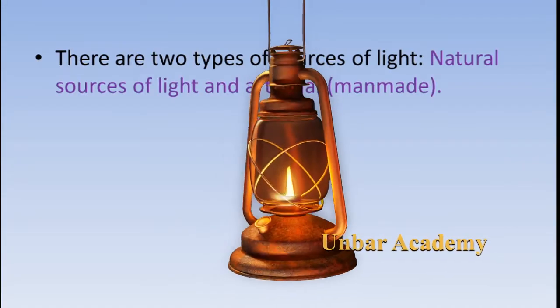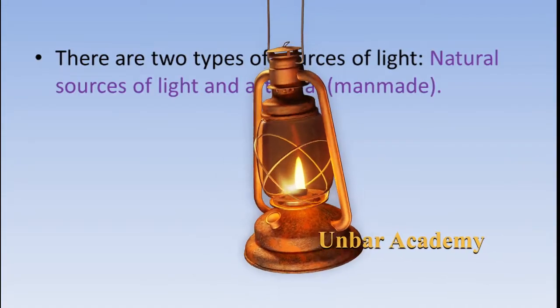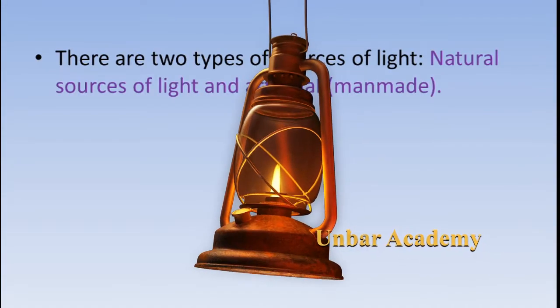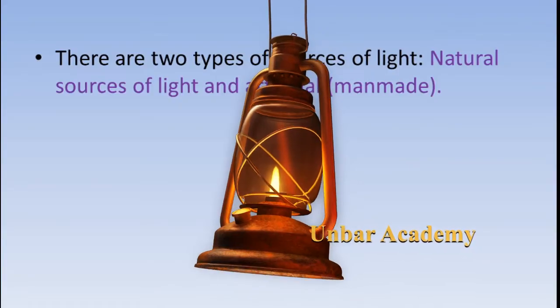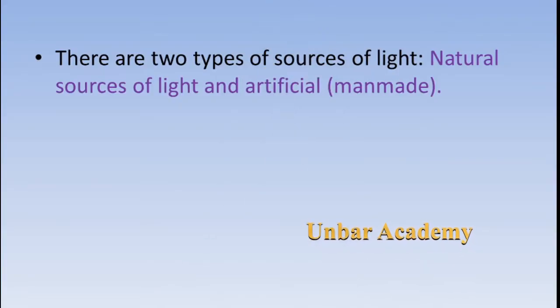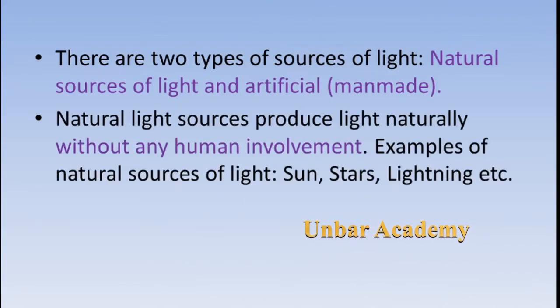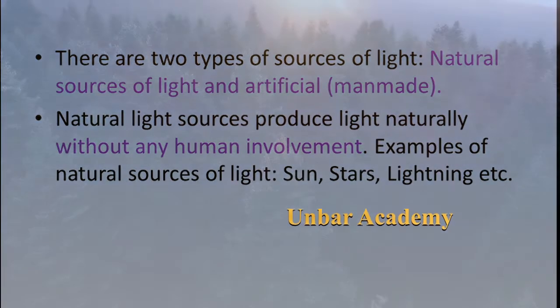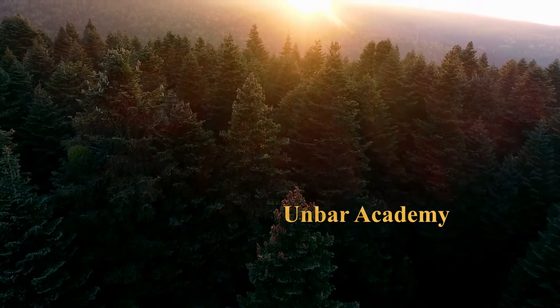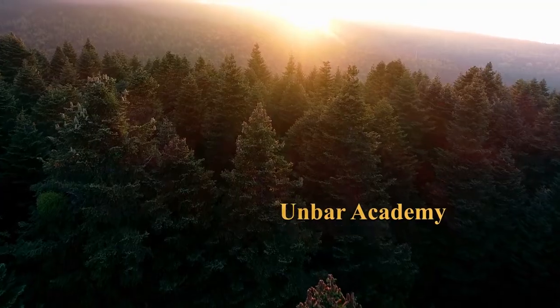There are two types of sources of light: natural source of light and artificial or man-made source of light. Natural light sources produce light naturally without any human involvement. Examples of natural sources of light are the sun and stars.